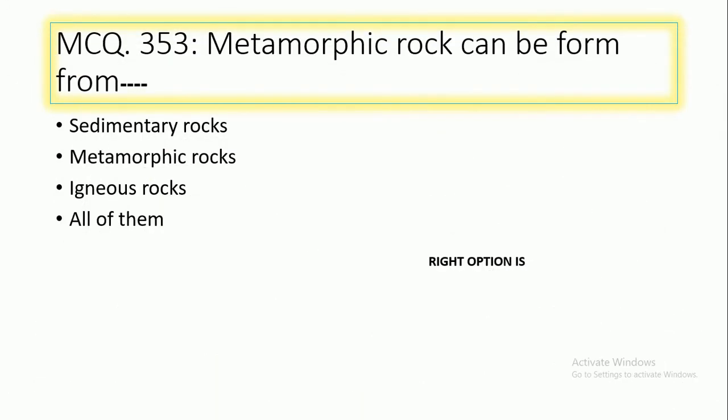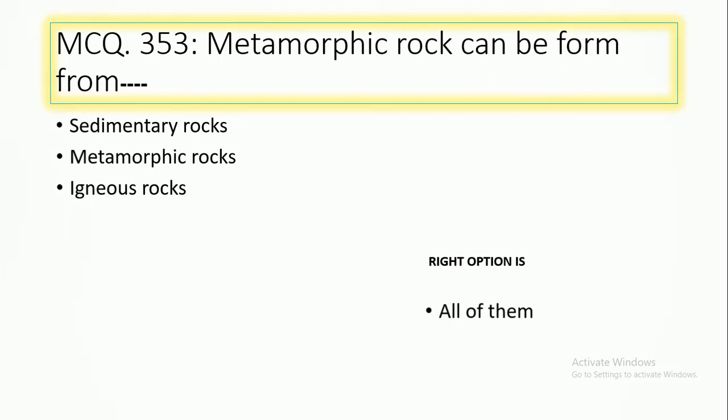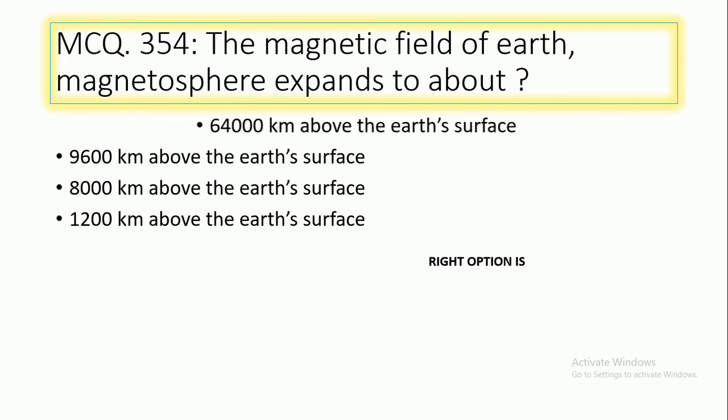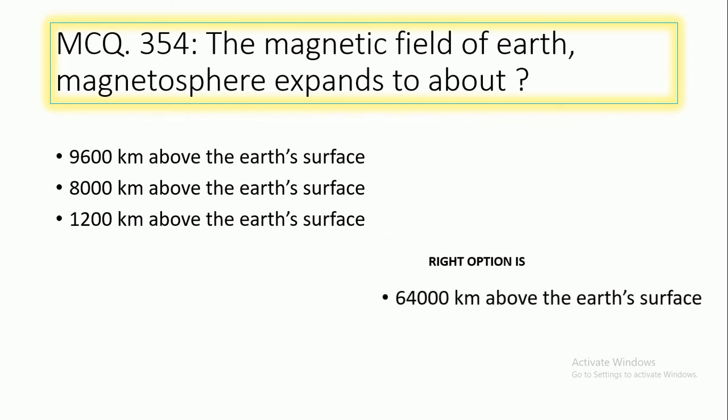MCQ number 353: Metamorphic rock can be formed from sedimentary rocks, igneous rocks, or all of them. The right option is all of them. About the earth surface — 8,000 km, 200 km, or 64,000 km above the earth surface? The right option is 64,000 km above the earth surface.